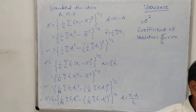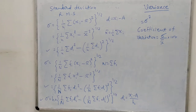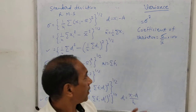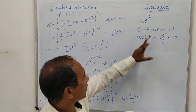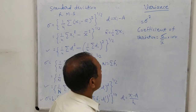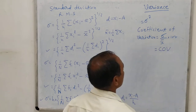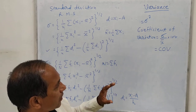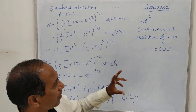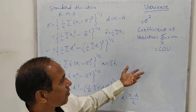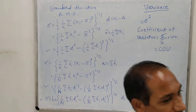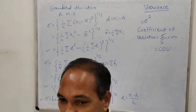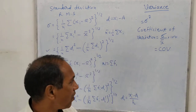When comparing two data sets, we need to find the coefficient of variation for both. Sometimes we also denote this by COV. The less value of coefficient of variation tells us that this data is better than the other data. So the less value of coefficient of variation is very much important.